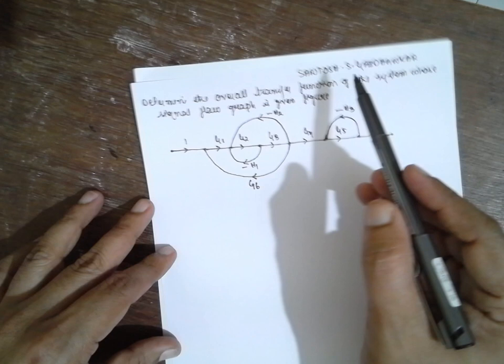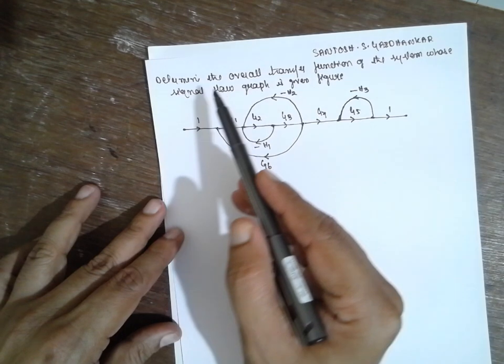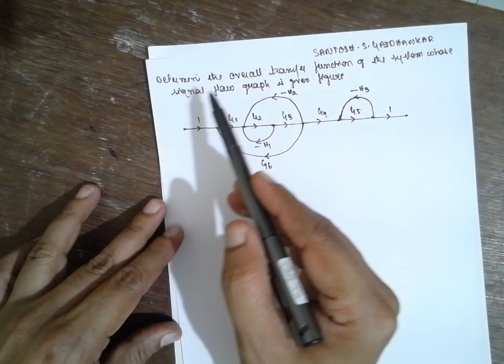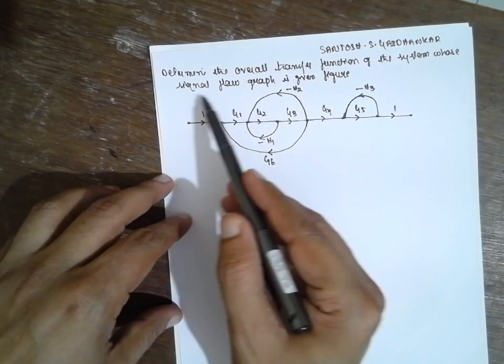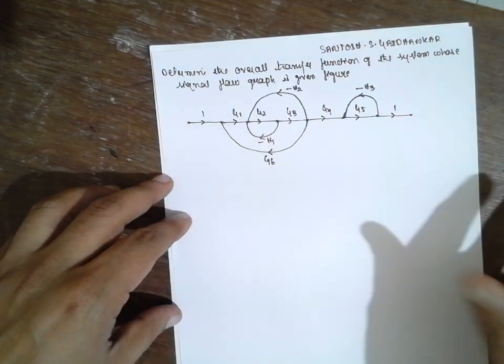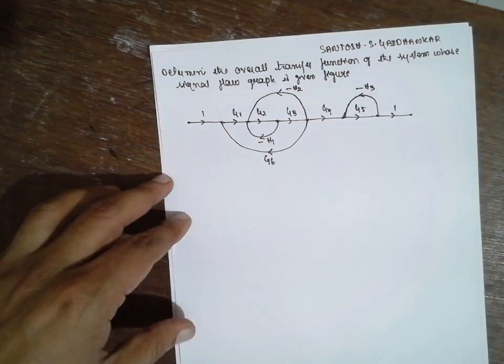We will determine the overall transfer function of a system whose signal flow graph is given. This is the signal flow graph, with input R(s) and output C(s).